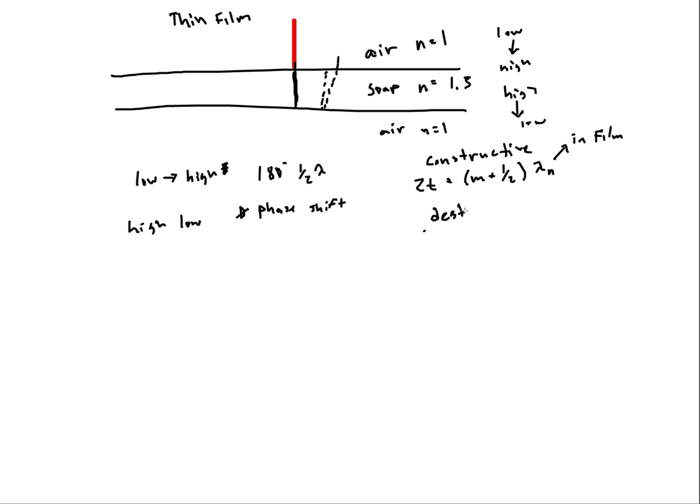Destructive interference for this problem, in other words where you wouldn't see anything, you would see a soap bubble that would appear black, would be 2T equals m times my wavelength in the film. Now let's talk about this m. This m is my order of refraction and so it has to be a whole number difference. And generally like for this problem if they wanted to know the minimum thickness you would plug in m as 1 if you wanted darkness. Minimum thickness here occurs at m as 1. Minimum thickness here occurs when m is 0. Now that is for this type of problem when you've got constructive and destructive interference.